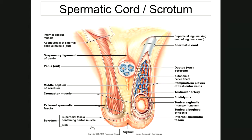The dartos muscle is a subcutaneous muscle of the scrotum and is also part of the septum that divides the scrotum into two compartments. This muscle causes the skin of the scrotum to wrinkle, as you can see in the picture. Then there is the cremaster muscle.